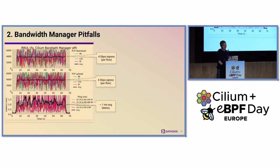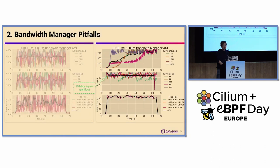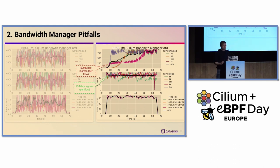When we enable the bandwidth manager, we observe some interesting things. First, the egress bandwidth is limited, which is normal because we are rate limiting the pod. However, the download bandwidth suffered a lot — it went from 4 gigabit per second baseline to around 500 megabit per second. And then the latency shot up to 80 milliseconds on average, so 80 times more.